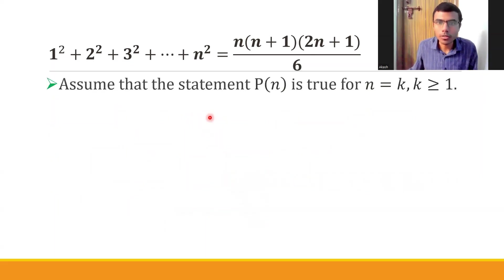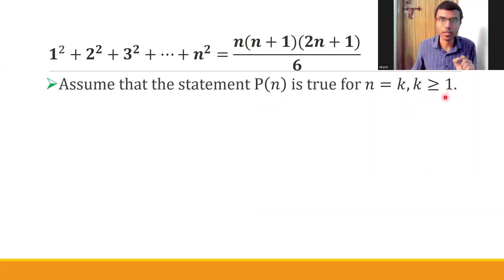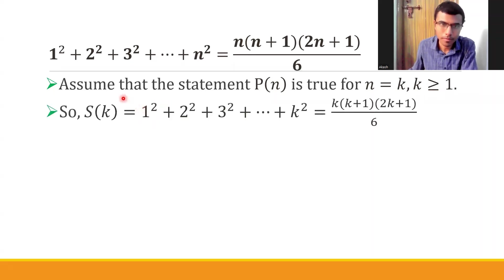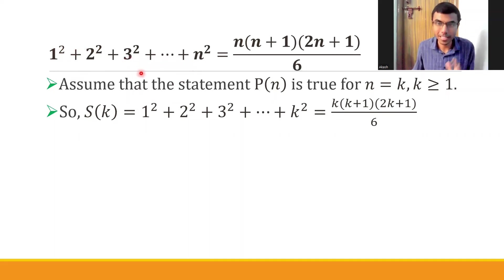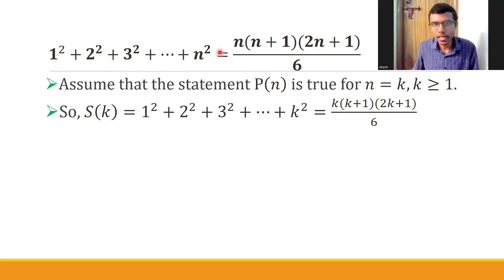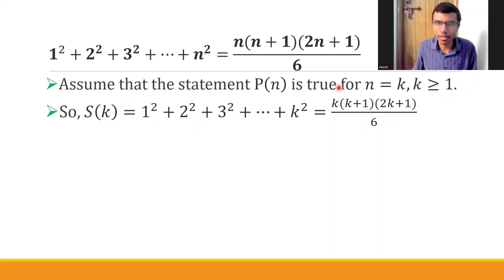Now assume that the statement P of n is true for n equal to k, where k is greater than or equal to 1. Please don't forget to mention that. So S of k — since P of n states 1² + 2² + ... + n² equals the formula, putting n = k gives us S of k equal to k(k+1)(2k+1) divided by 6.